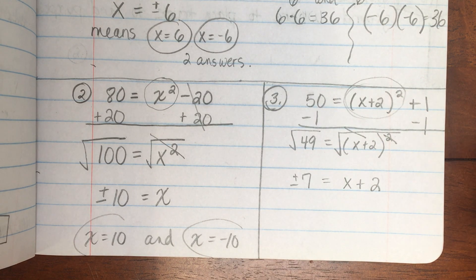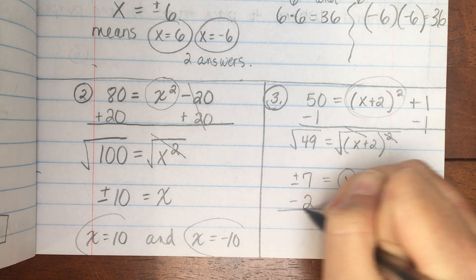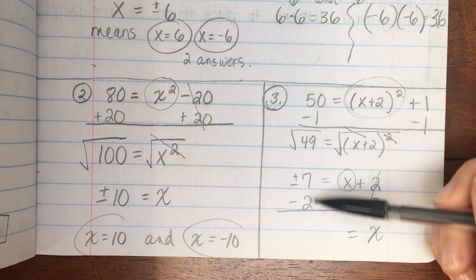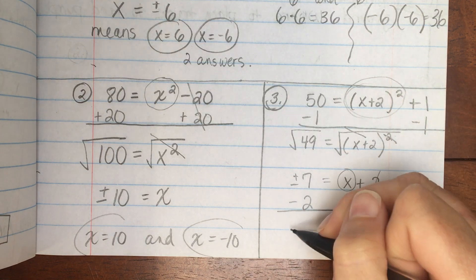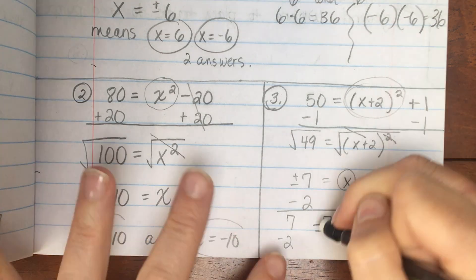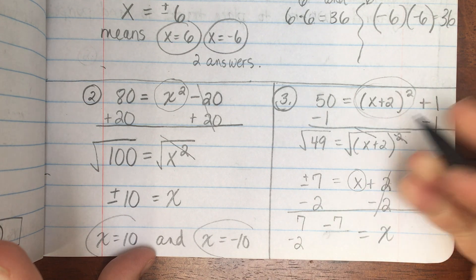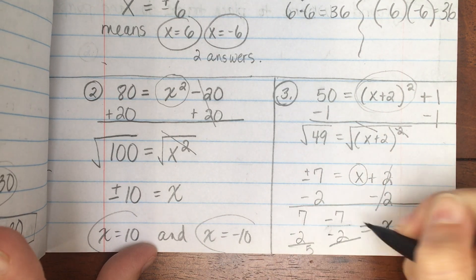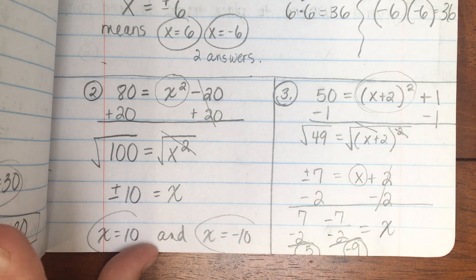So we have one more step. And that is to solve for x. Subtract 2 to both sides. So we get two answers, x equals. Now this looks weird, but remember this just means a plus 7 and a negative 7. So really you have two answers. 7 take away 2 and a negative 7 take away 2. So we get 5 and negative 7 take away 2 is negative 9. Two answers for x.